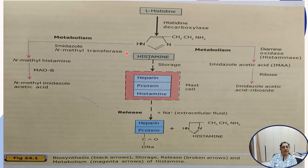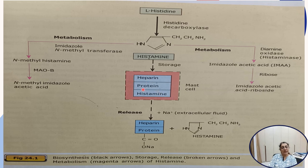After histamine is formed, it is metabolized by the enzyme imidazole N-methyltransferase into N-methyl histamine. N-methyl histamine is then converted into N-methyl imidazole acetic acid by MAO-B enzyme. This N-methyl imidazole acetic acid is excreted in urine. After formation, histamine is stored in mast cells along with heparin and protein.